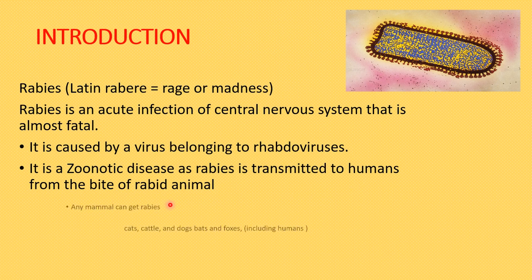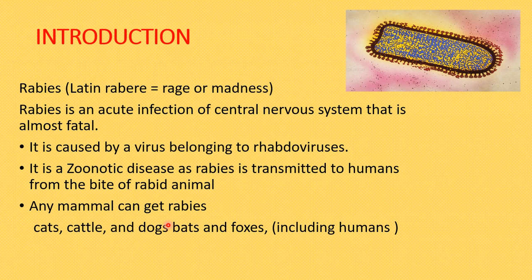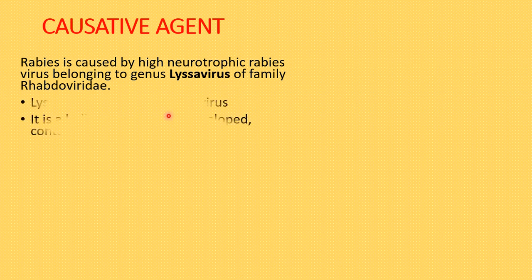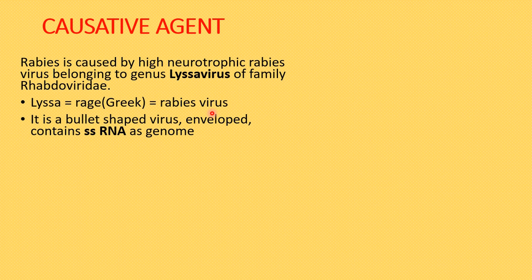Any mammal can contract rabies, including rabbits, cattle, cats, dogs, bats, foxes — and humans. The causative agent is a highly neurotrophic rabies virus, meaning it damages the nervous system. It belongs to the family Rhabdoviridae and the genus Lyssavirus. In Greek, 'lyssa' means rage, confirming the connection to the rabies virus.